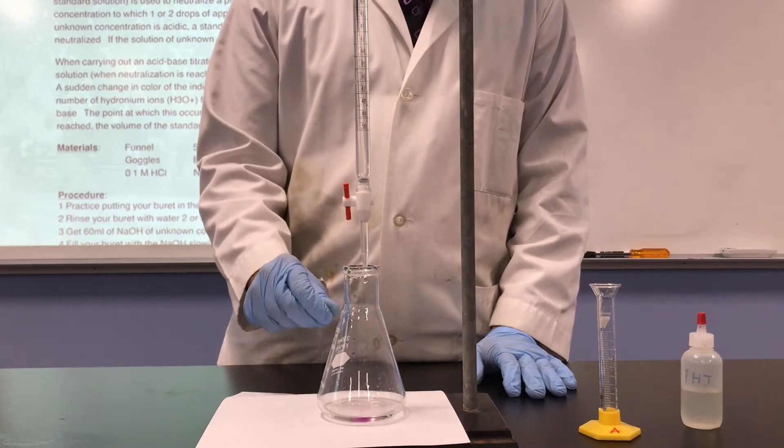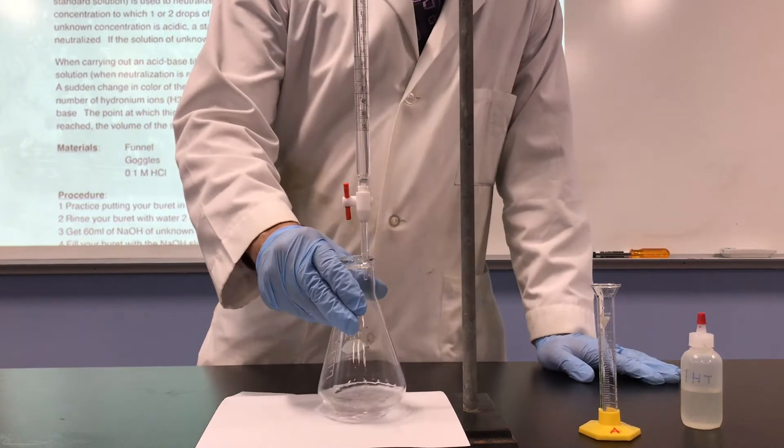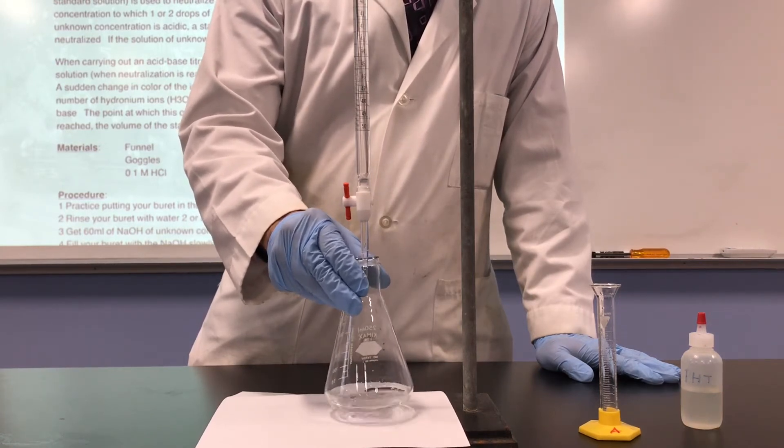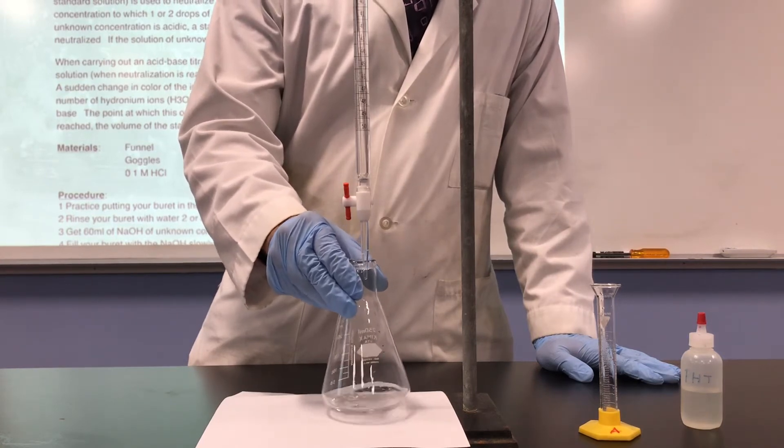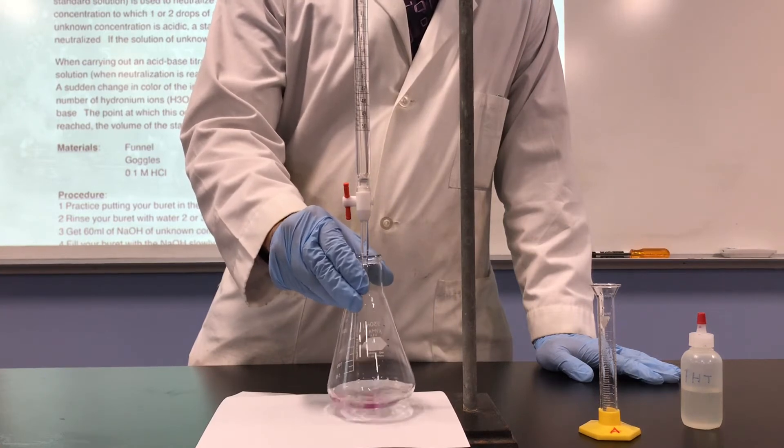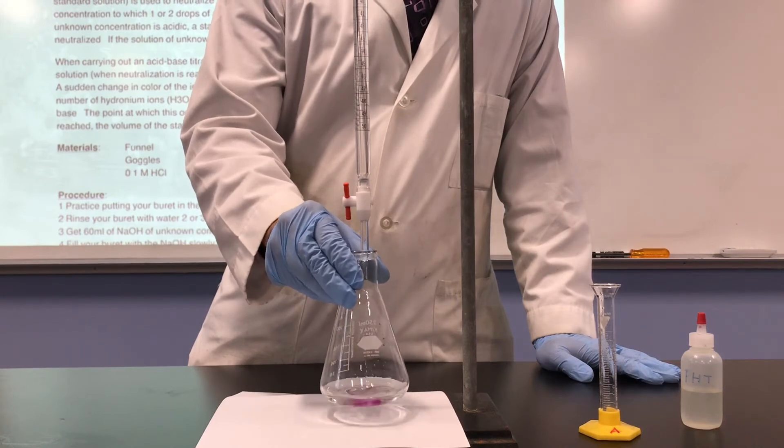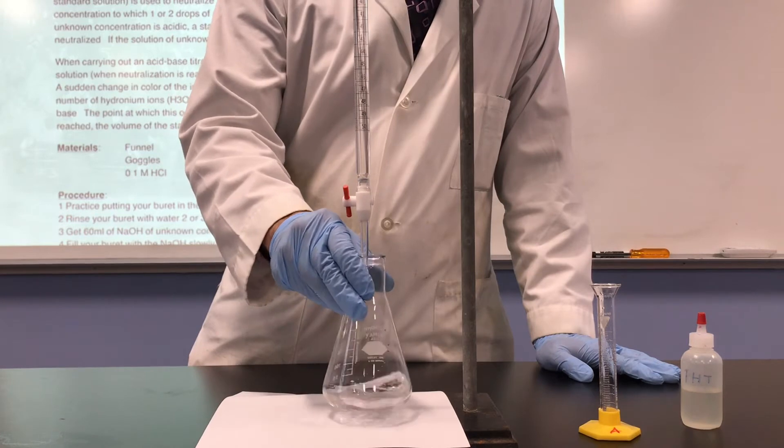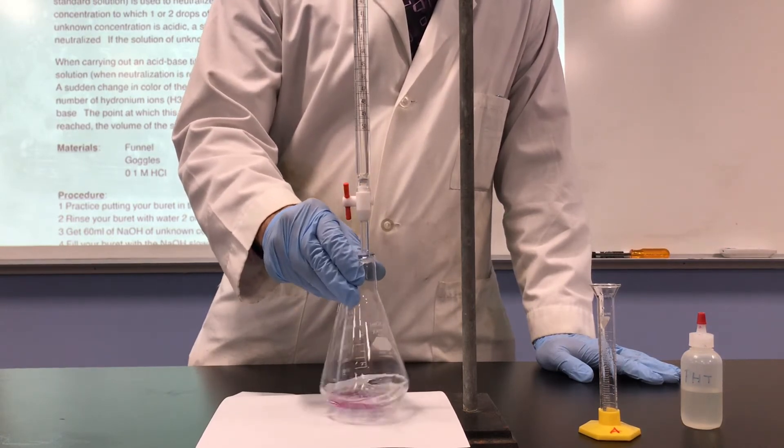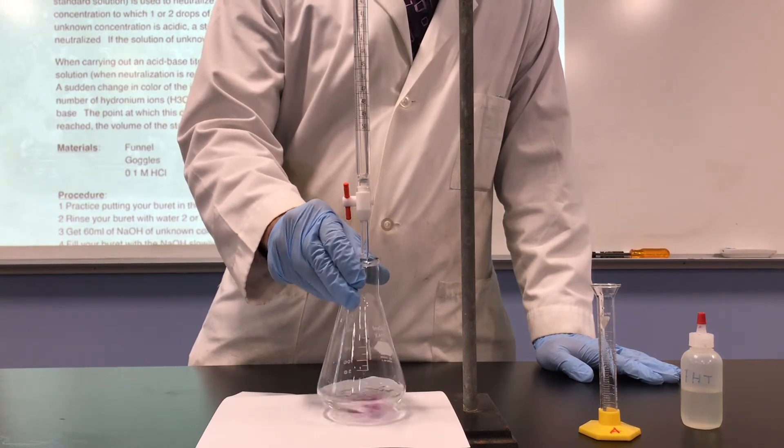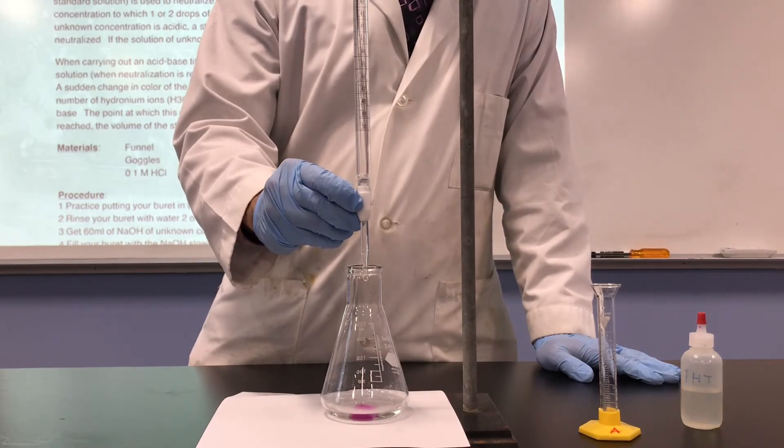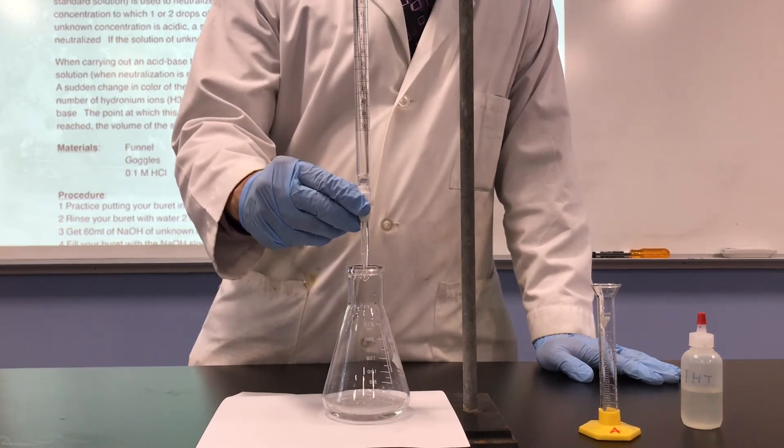Now you might be able to see that once the base goes into the acid and phenolphthalein, you get pink in the solution. But when you swirl, the pink goes away. We know we reach our end point when the pink stays for 30 seconds of swirling. As you can see, as we put more base in there, the pink stays a little bit longer each time. The pink is a good sign. That means we set up everything properly. Phenolphthalein is colorless in acidic conditions, and it turns pink under basic conditions.